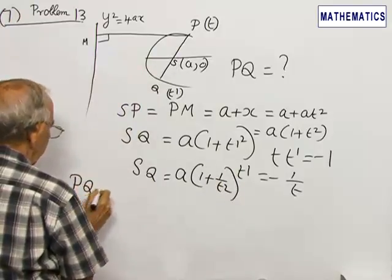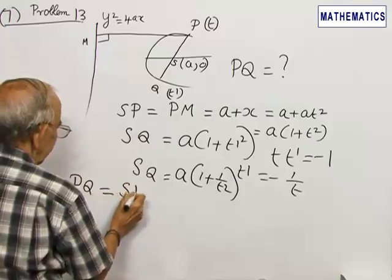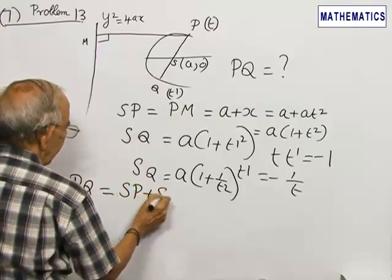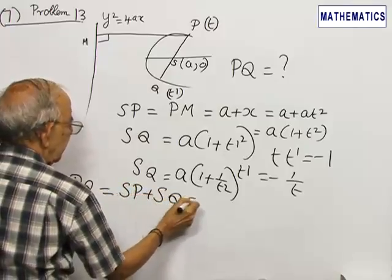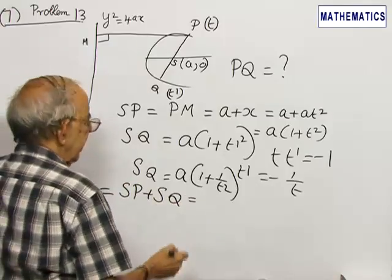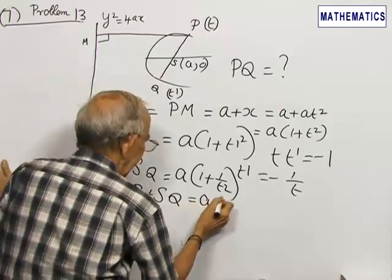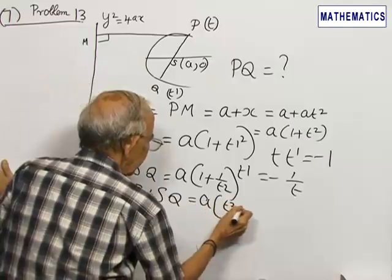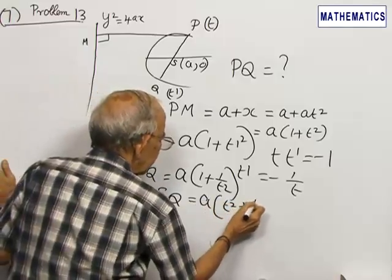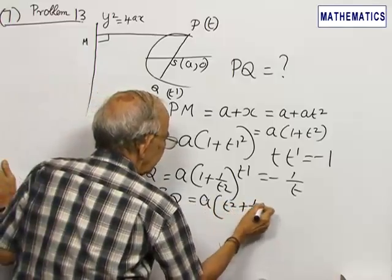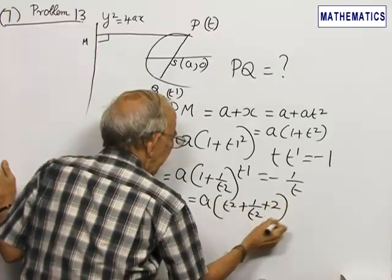PQ is equal to SP plus SQ. That gives me a into t squared plus 1 by t squared plus 2.